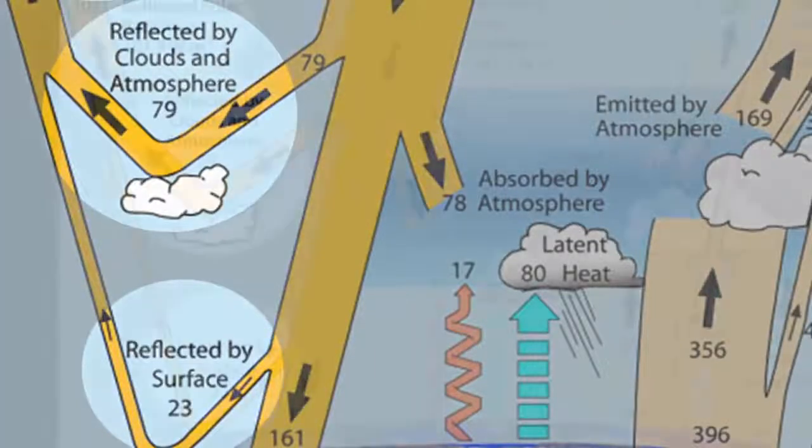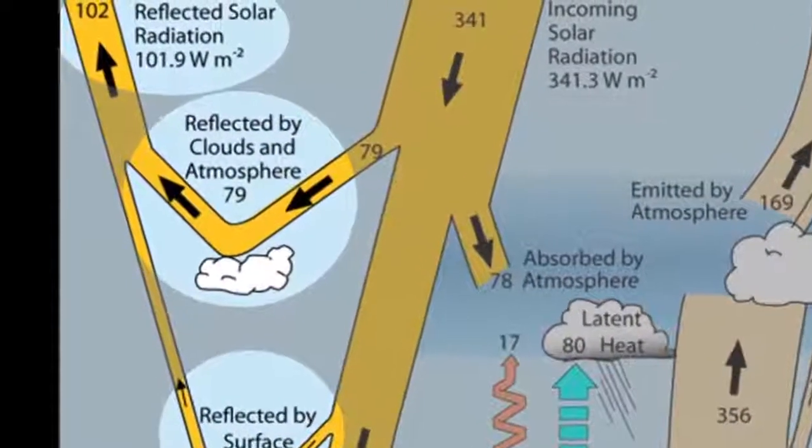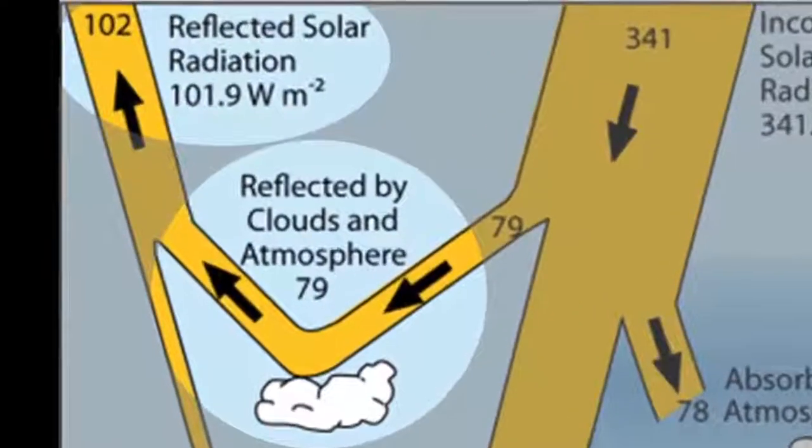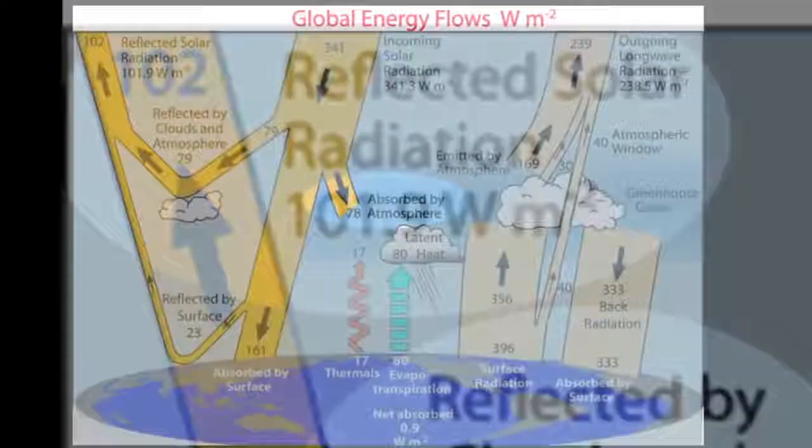Added together, nearly 30% or 102 watts per square meter of the sun's energy returns directly to space.